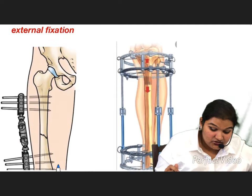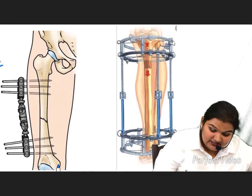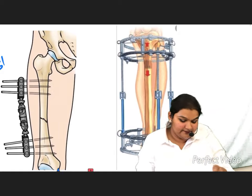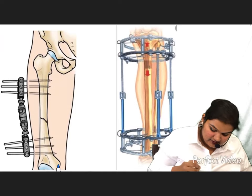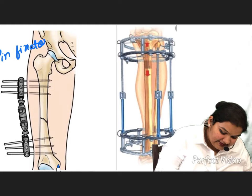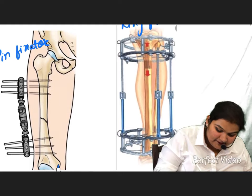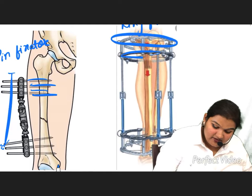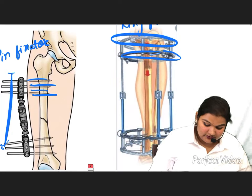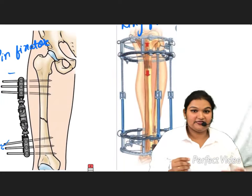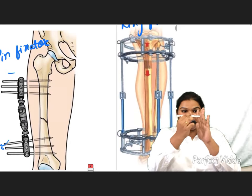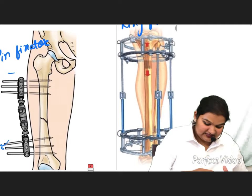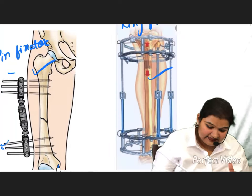In external fixation, the fixator is outside the body with pins inserted through the skin into the bone. There are two types: the pin fixator, which is straight, and the ring fixator, which has rings. The fixator is external while the pins go into the bone, stabilizing the fracture from outside.